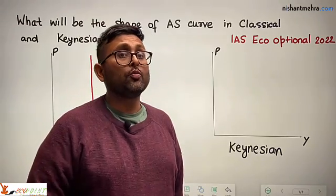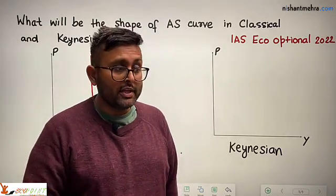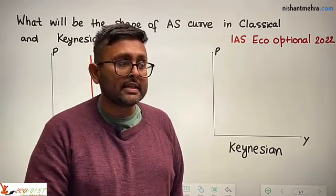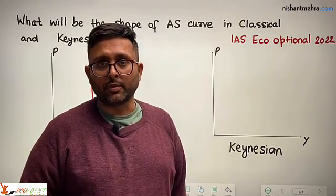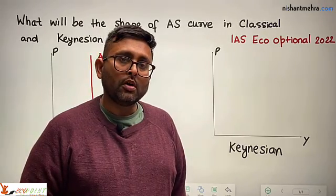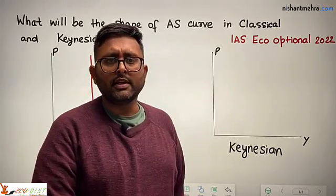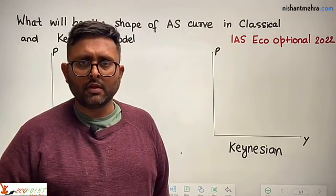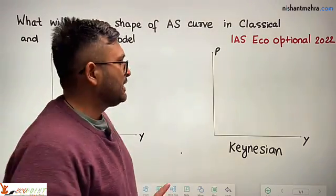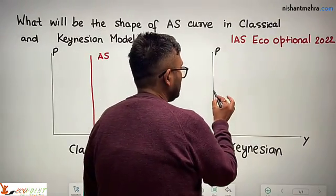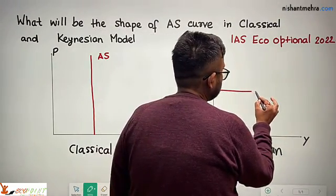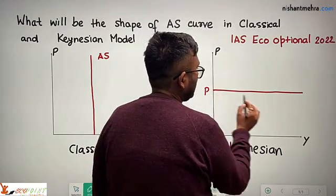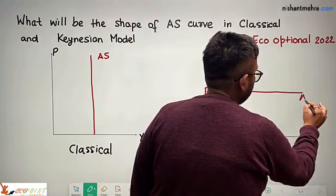They also do not want to irritate their customers by suddenly increasing the price when demand goes up. So whatever be the increase in demand, they will still sell at the same price and supply at whatever quantity is needed at that price. Because of this, the aggregate supply curve becomes horizontal.